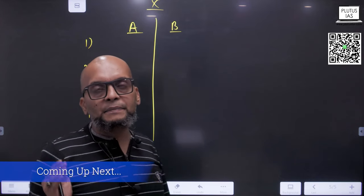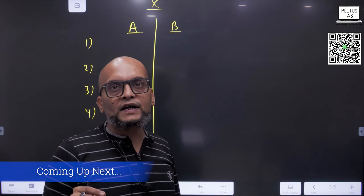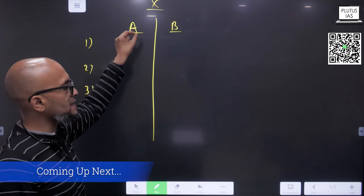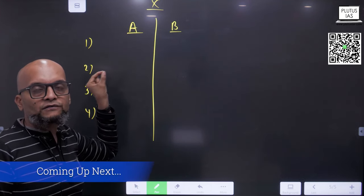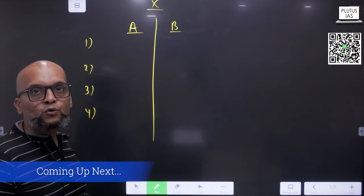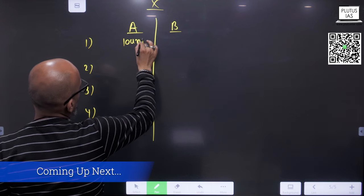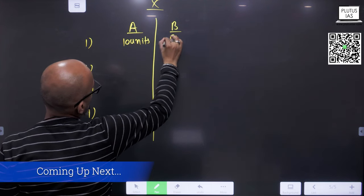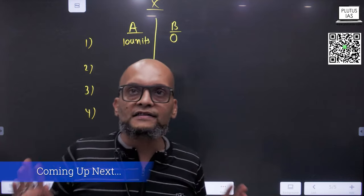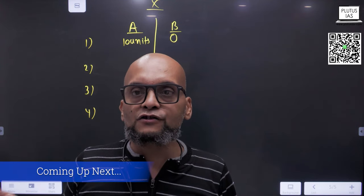There are only two goods that are being manufactured, and these goods are good A and good B. If all the resources of the economy are used in the manufacturing of good A, then let's say 10 units of good A are produced and 0 units of good B are produced when all the resources are employed in the manufacturing of good A.